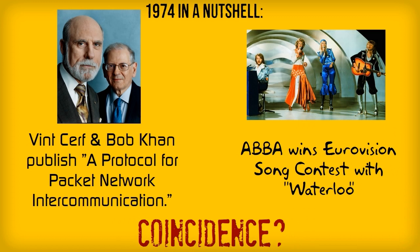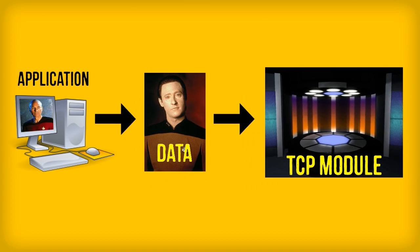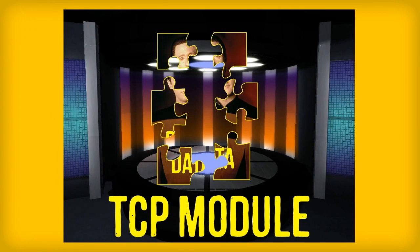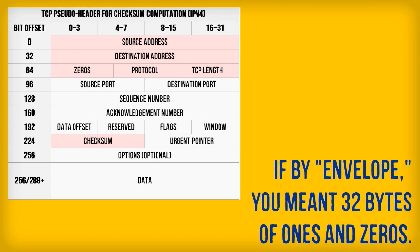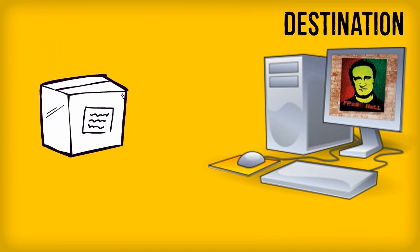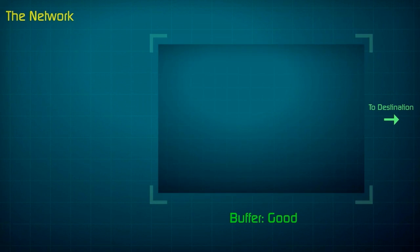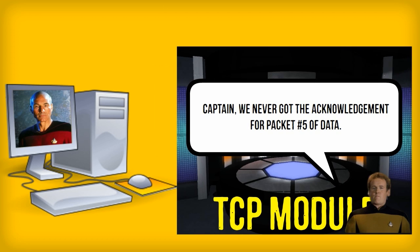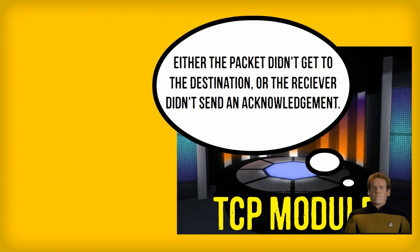TCP works more or less like this: when an application decides to send a chunk of data, it hands it to a TCP module. The TCP module breaks the data into chunks called segments, which are then placed inside an IP packet containing information about the data's destination — a bit like putting a letter in an addressed envelope. The packet is sent out, and once received, an acknowledgement is sent back to the sender.